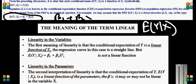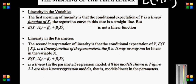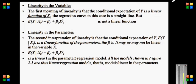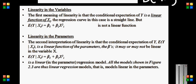Now what I want to tell you is what is meant by linearity. In econometrics, you have two types of linearity: one is linear in variables and the other is linear in parameters. What I am concerned with is what would be called linear in parameters.